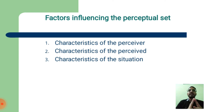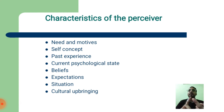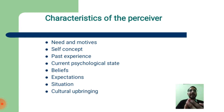Factors that influence the perceptual set. First, characteristics of the perceiver, which include: needs and motives, self-concept, past experience, current psychological state, beliefs, expectations, situation, and cultural upbringing.